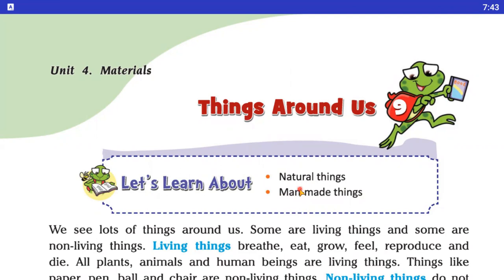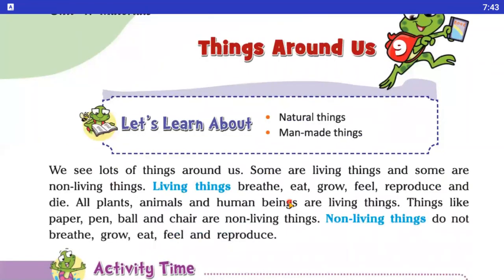What is the meaning of natural things? Natural things are the things that we get through nature. And man-made things? Human beings make those things. So in this chapter, we are going to read about natural things and man-made things. Let's get started and read this chapter.